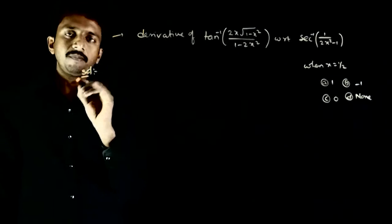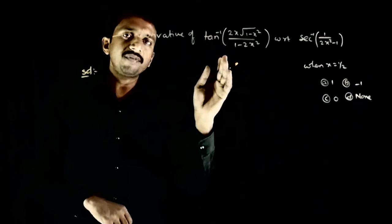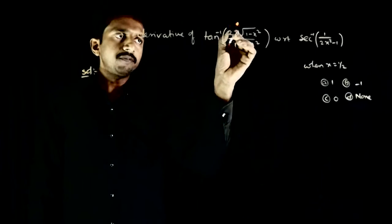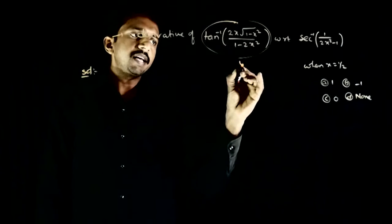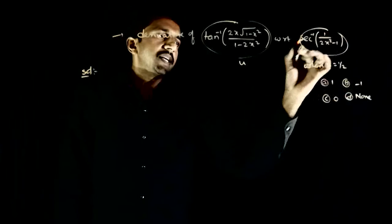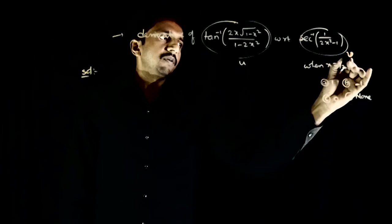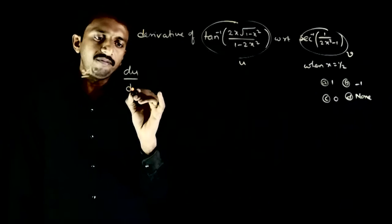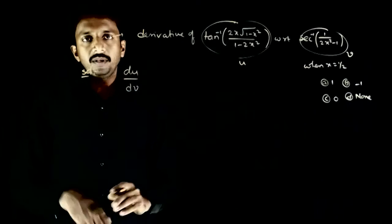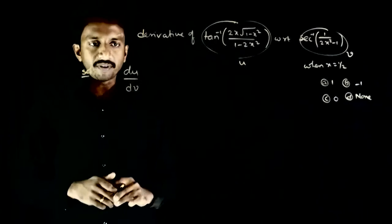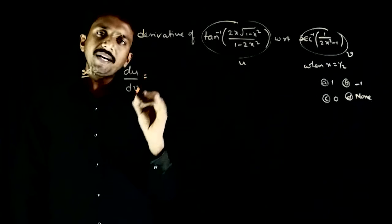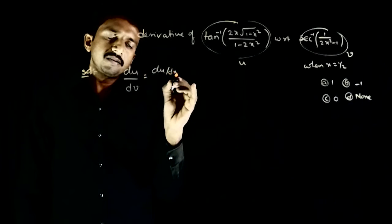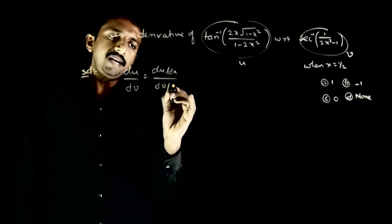This is based on the concept of differentiation of one function with respect to another function. Let the first function be u and the second function be v. We want du/dv. Since u and v are both functions of x, du/dv can be written as (du/dx) divided by (dv/dx).